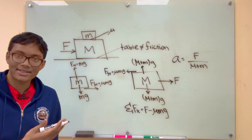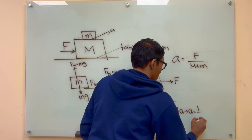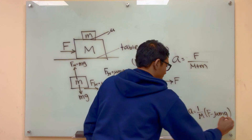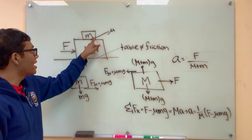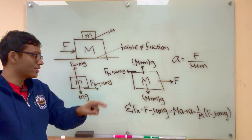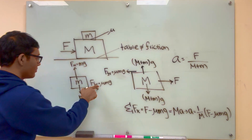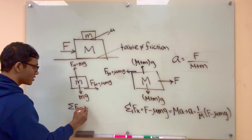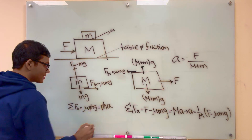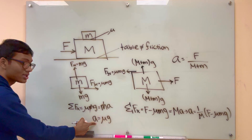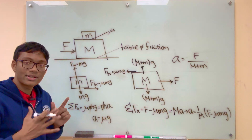Now let's write down the net force in the horizontal direction for the bottom block. That's going to be the external force minus the force of friction: F minus mu mg. This equals capital M times A. Solving for the acceleration, that's 1 over capital M times (F minus mu mg). Now, the acceleration of the bottom block must equal the acceleration supplied by the force of friction on the top block if they are to move together. We already know the acceleration of the top block: the only force in the horizontal direction is mu mg, equal to lowercase ma, so canceling the m's gives acceleration equals mu g.